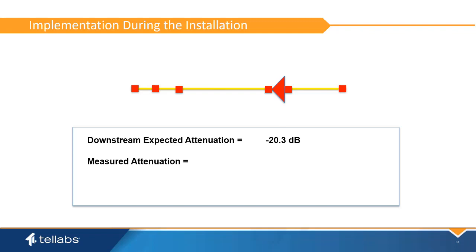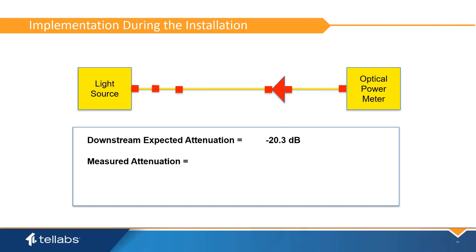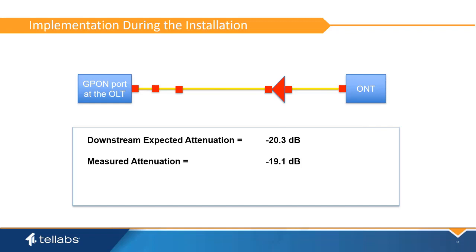Once expected attenuation for the plan has been established, these numbers can be used as a basis for validating the installation of both the PON fiber infrastructure and the optical LAN equipment. Using insertion testing, fiber installers can find the actual dB loss of the PON infrastructure and check it against the expected attenuation. When the OLT and ONT are deployed, the installer can determine the downstream attenuation by subtracting the launch power at the OLT transceiver from the received power at the ONT.